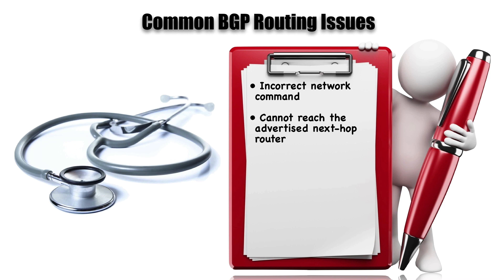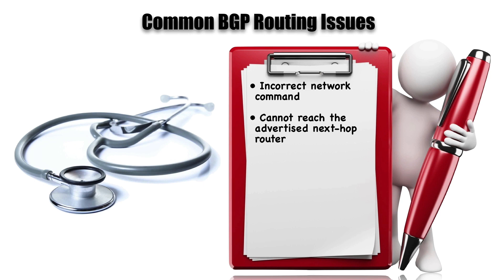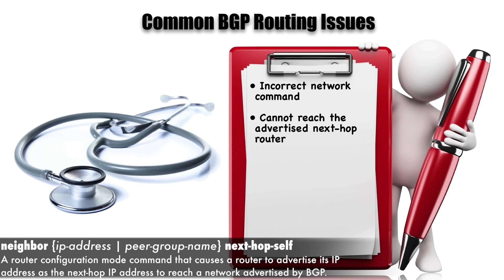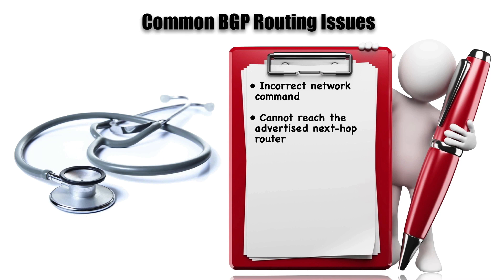Something more unique to BGP is the concept of the next hop router. When an advertisement comes into an autonomous system and is advertised over IBGP connections to routers in the same autonomous system, by default the next hop router information is not updated. A router may have no way to reach that next hop address. One way to address this is to redistribute BGP into an IGP, or set up a static route. However, we can use 'neighbor next-hop-self' in BGP router configuration, which causes a router to advertise its own IP address as the next hop when sending updates to IBGP neighbors.